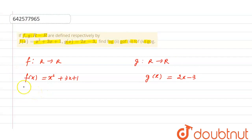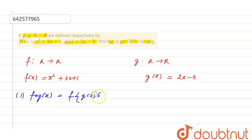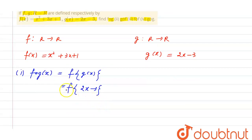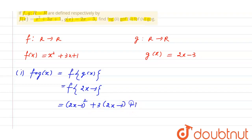First of all, we need to calculate the value of fog. Fog can be calculated on variable x, since x is the only variable in the question. So fog of x equals f of g(x). The value of g(x) is 2x minus 3, so we need to put 2x minus 3 in place of x in f(x). This gives us (2x minus 3) raised to the power 2, plus 3 into (2x minus 3), plus 1.